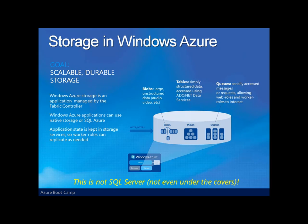Regardless of how it is stored — whether it be blobs, tables, or queues — all the data in Windows Azure storage is replicated three times. This replication provides fault tolerance, and each replicate is also on a different server. All three Windows Azure storage styles — blobs, queues, tables — use the conventions of REST, the REST API, to store, modify, and retrieve data. However, an Azure storage client API that uses ADO.NET data services and LINQ can also be used by .NET applications.